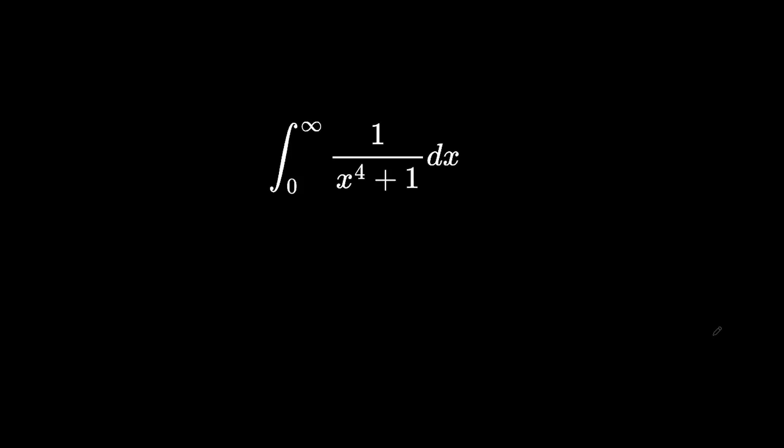Integrating 1 over x to the 4 plus 1 between 0 and infinity. So first things first, we're going to do a u substitution. Let's say u equals x to the 4, du equals 4x cubed dx.